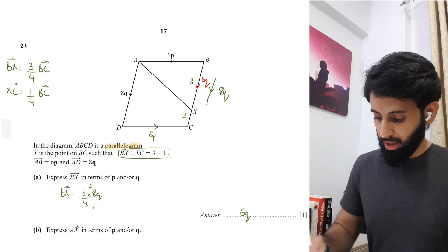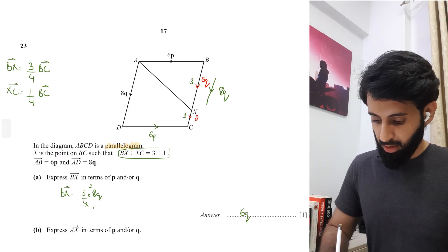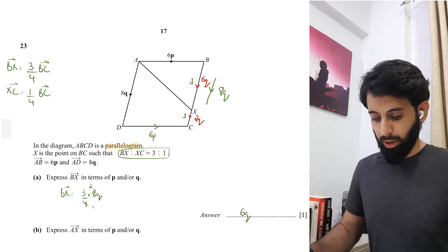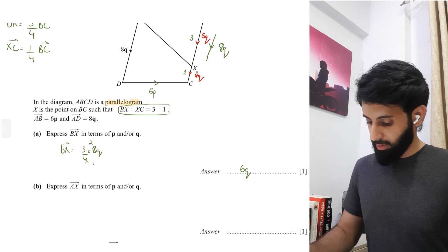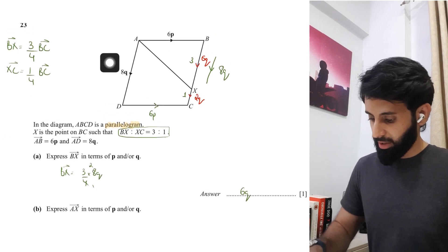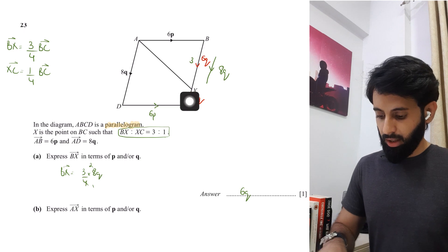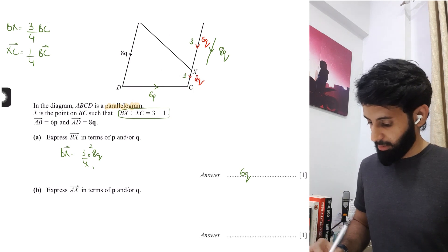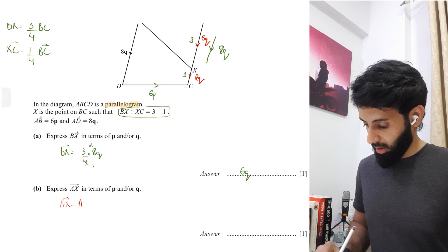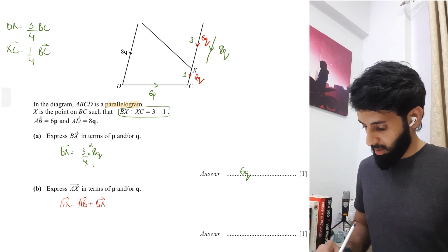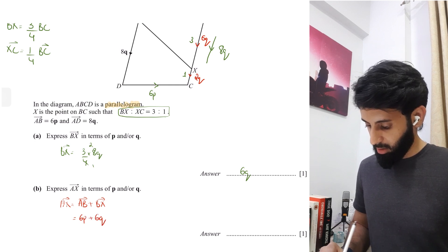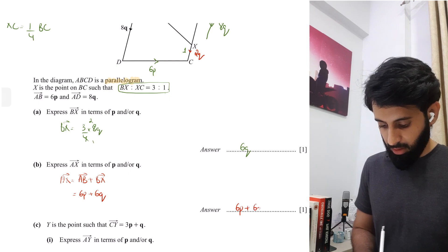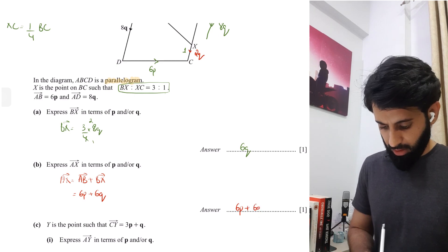You should also work out XC, which is going to be 2Q. 8Q minus 6Q is 2Q. Next, you have to find out AX, which should be a no-brainer. We're going to go from A to B and then from B to X. AX is A to B plus B to X, so AB is 6P and B to X is 6Q. So AX equals 6P plus 6Q.